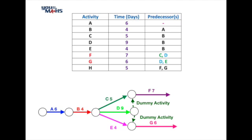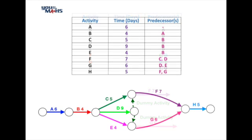Now we can place our remaining activity H at the end of our network because that follows on from F and G, and that's quite straightforward because there are two predecessors both leading into task H. H is not a predecessor to any other activity, so that's the completion of our network.